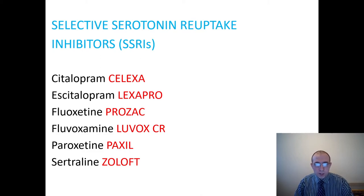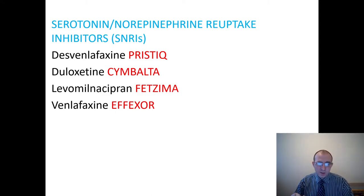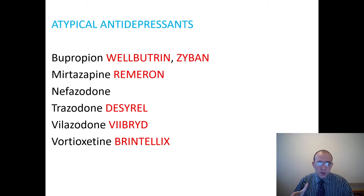Those are the names of drugs that you can find in a pharmacy. The second group is serotonin-norepinephrine reuptake inhibitors — SNRIs. These are desvenlafaxine, duloxetine, levomilnacipran, and venlafaxine. The next group is atypical antidepressants: bupropion, mirtazapine, nefazodone, trazodone, vilazodone, and vortioxetine.